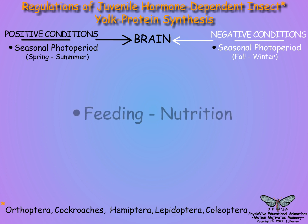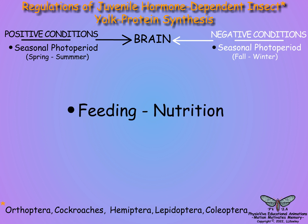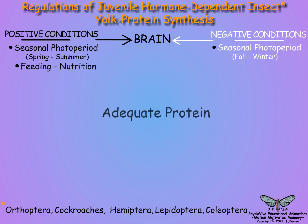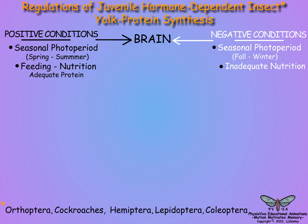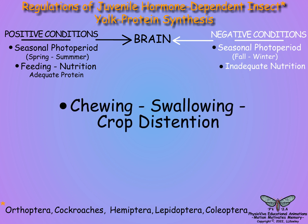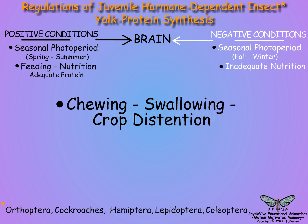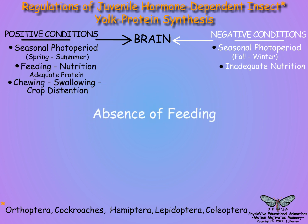In insect species that feed as adults, it is essential that they consume a protein-rich diet. The presence of food and the mechanical actions of chewing, swallowing, and distention of the crop produce sensory stimuli that signal via the nervous system that nutritional competency is likely attained.